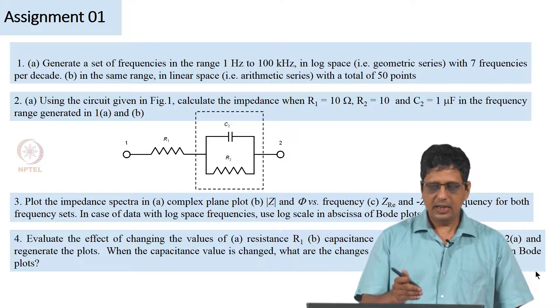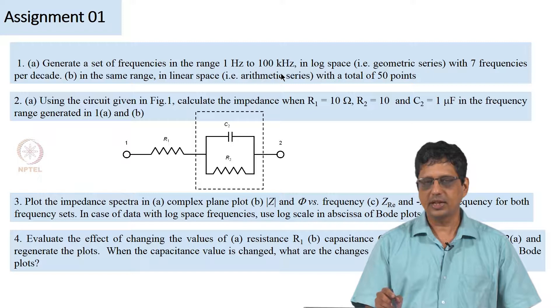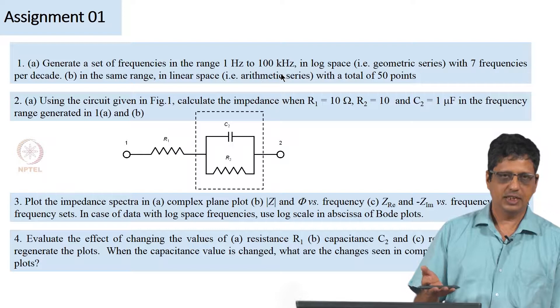So for that, I have split it into multiple questions. First part is to just generate a log space or geometric series frequencies from a minimum value of 1 hertz to maximum of 100 kilohertz, and typically we give 7 frequencies per decade. So I have given that number. At the minimum, you need 5 frequencies per decade. If you can get 10 frequencies per decade, it is well and good.